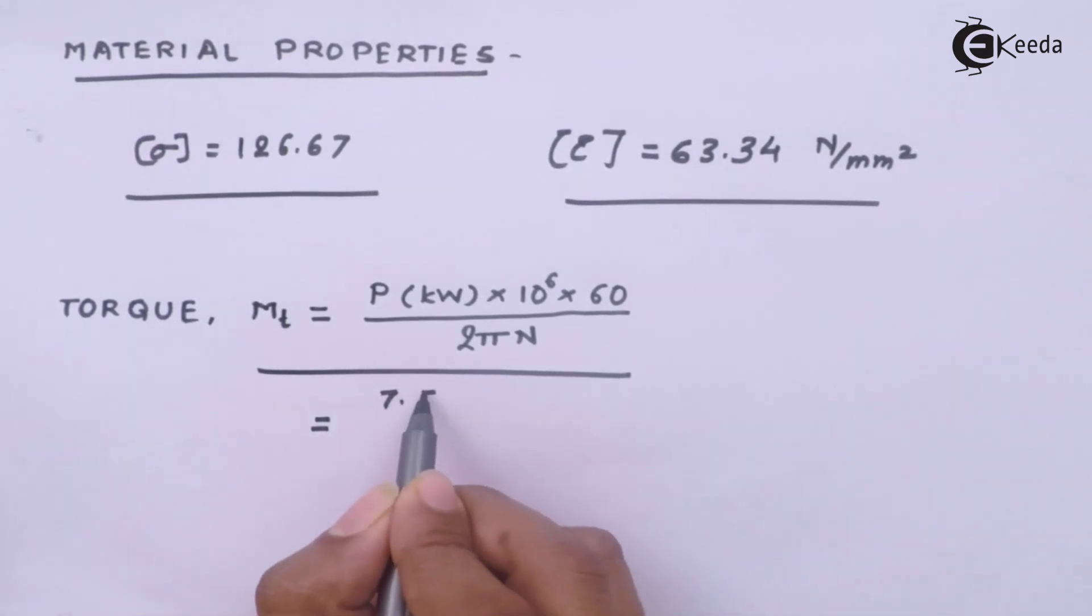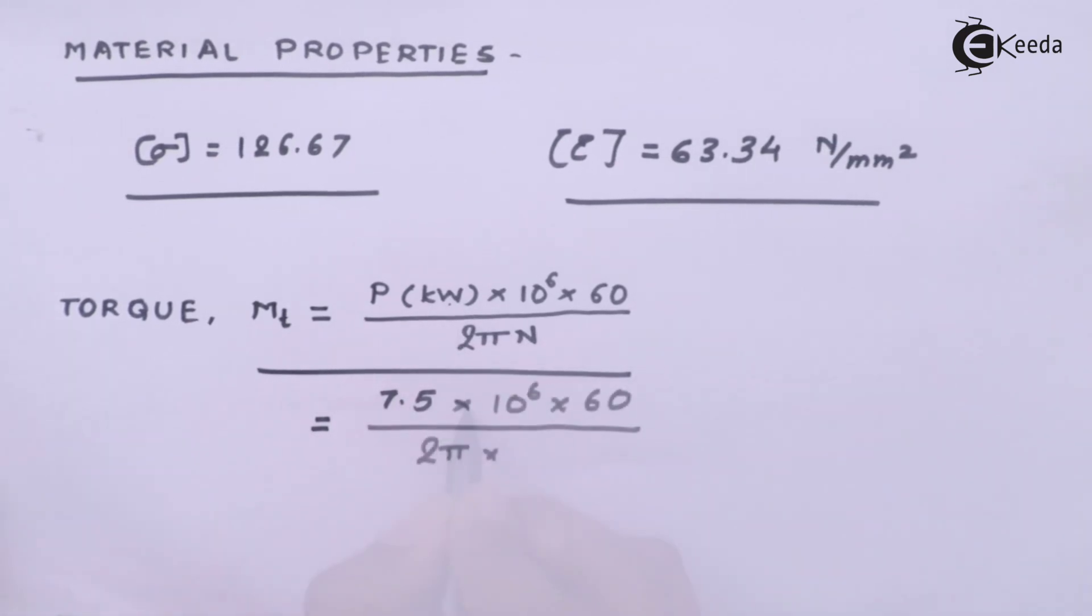The power we have been given is 7.5 kilowatt. The rotational speed that we have is 360 RPM. And hence the torque to be transmitted becomes Newton millimeter.